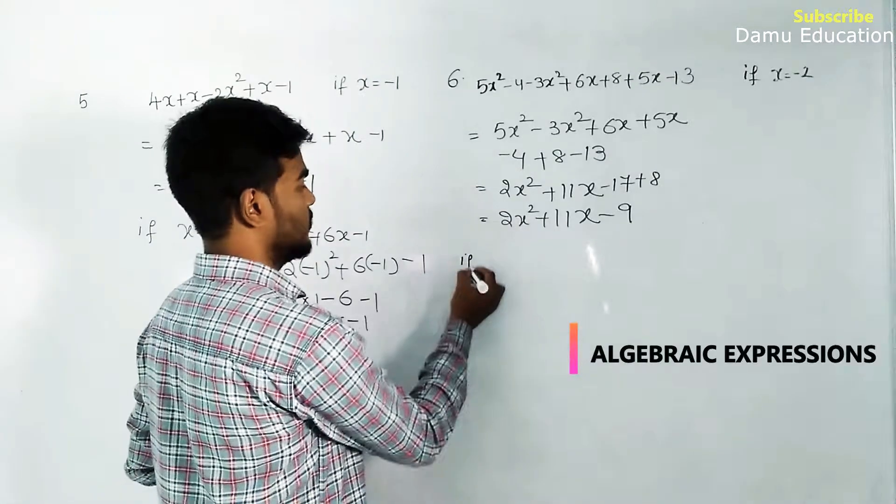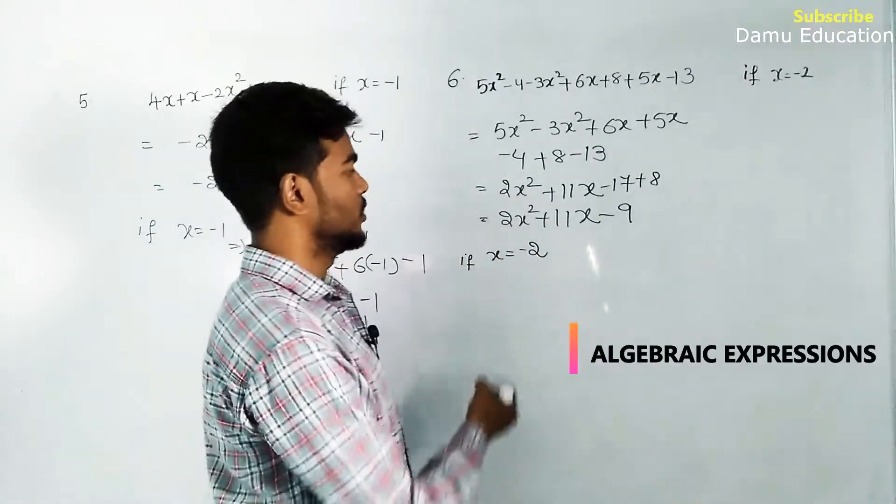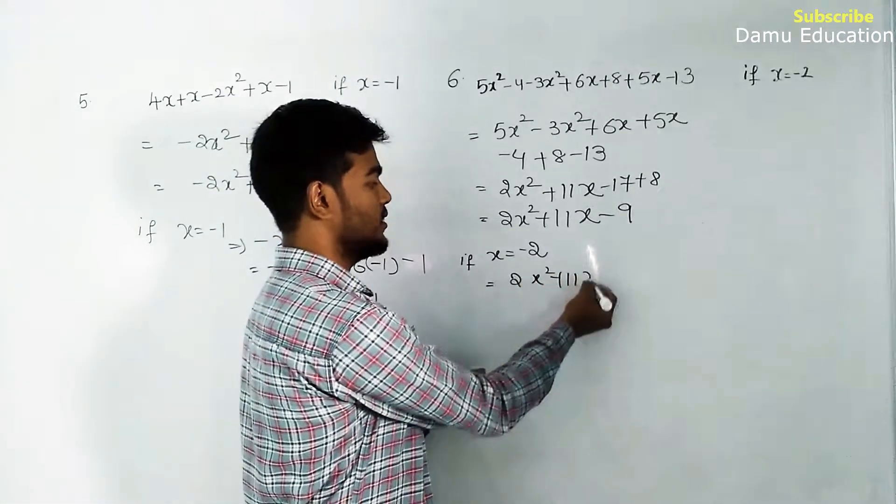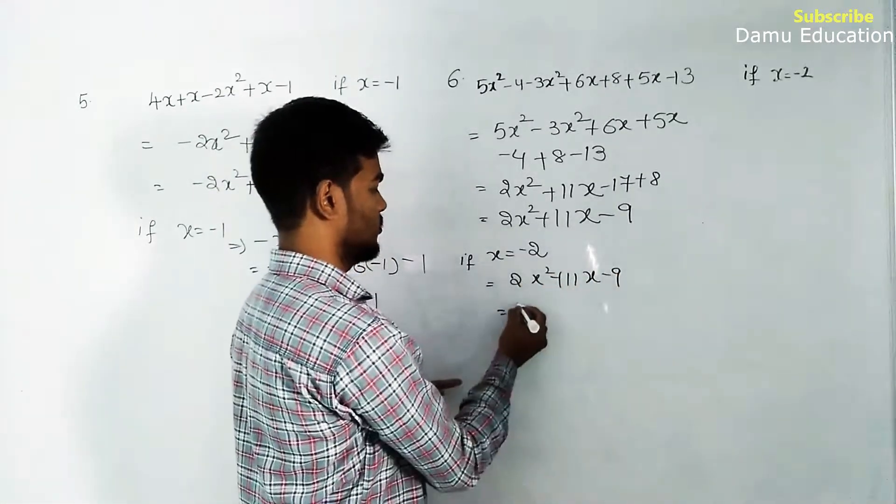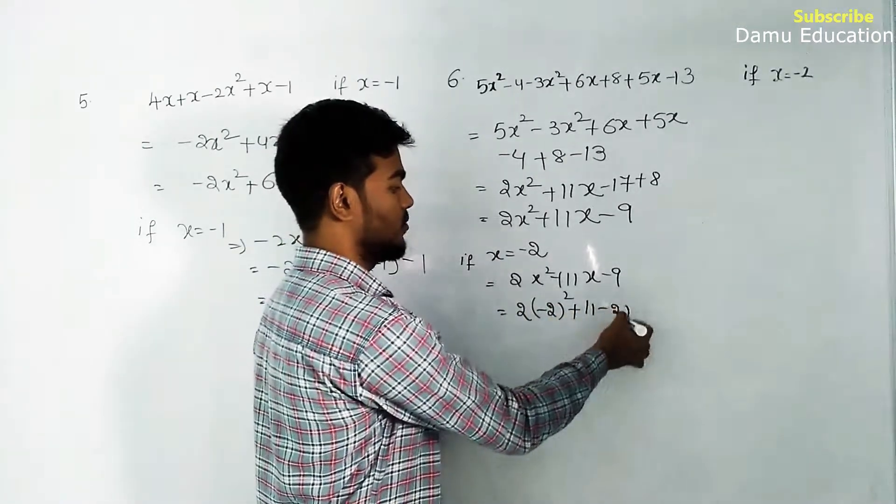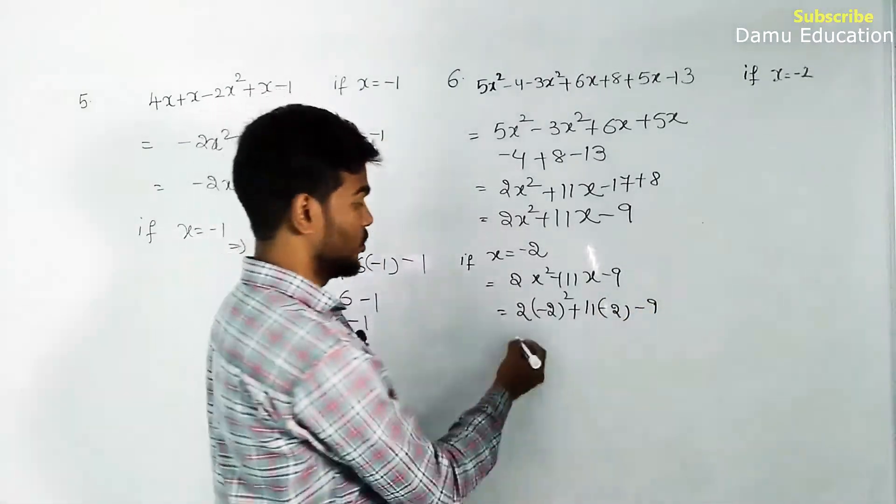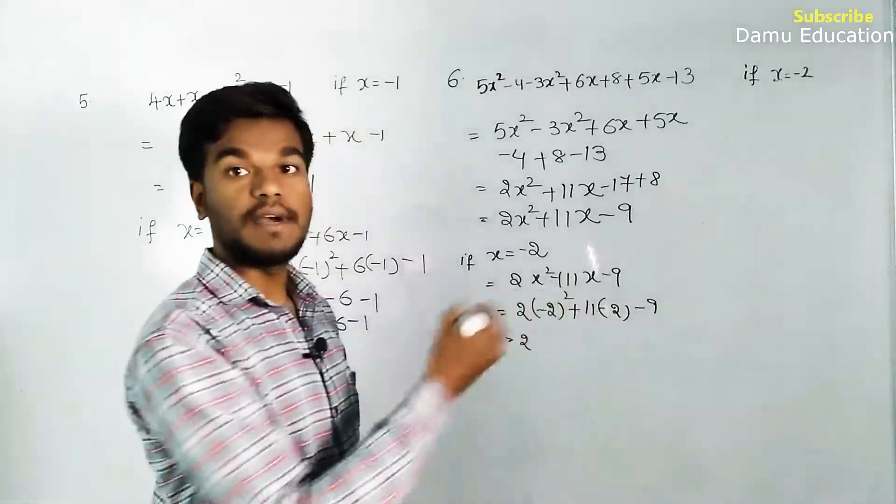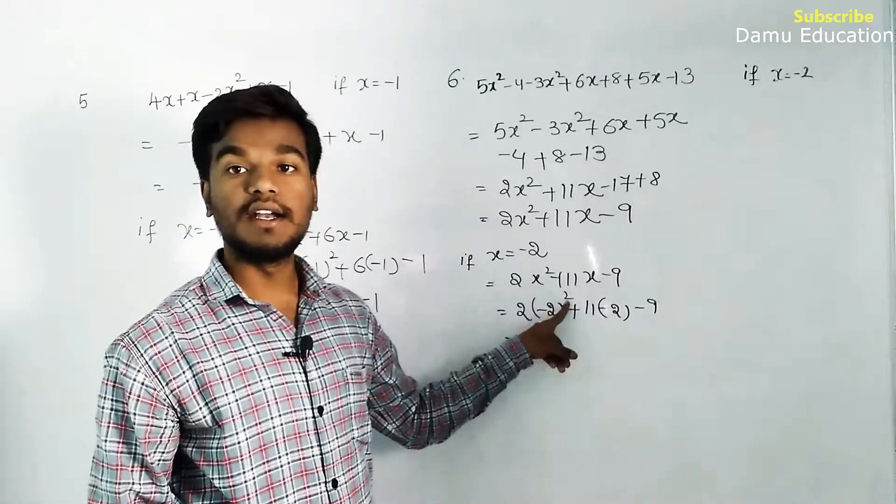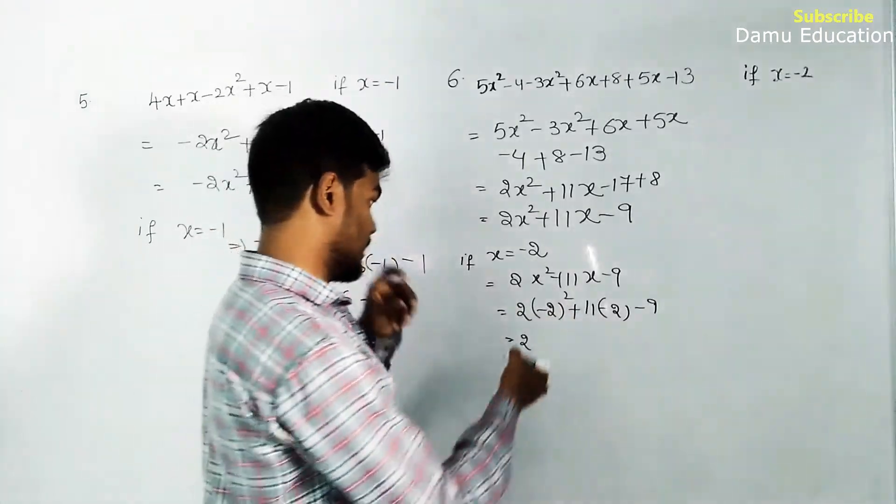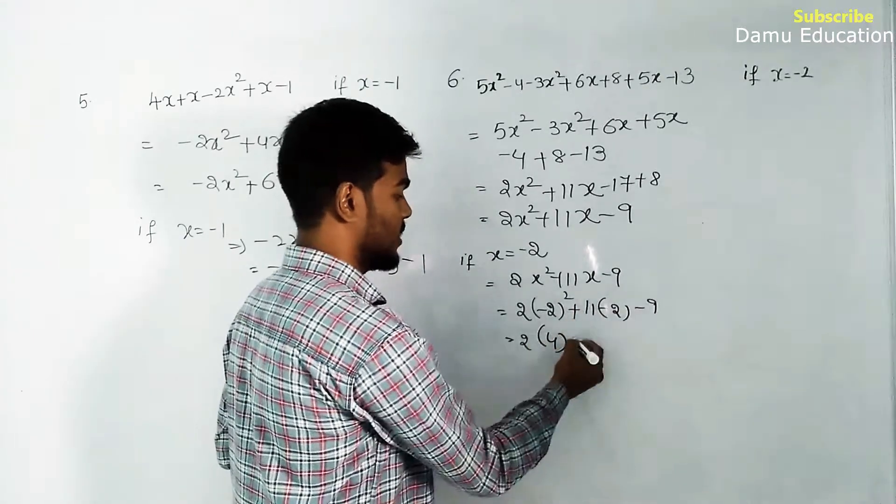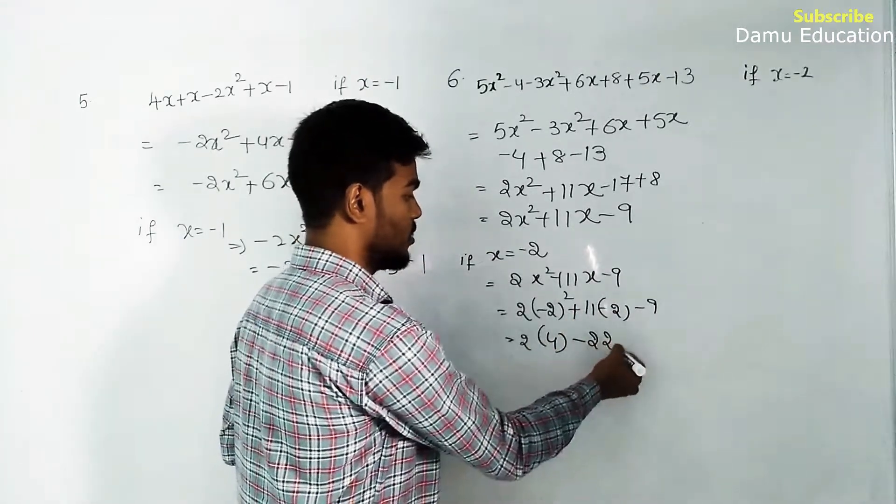Substitute x = -2: 2x² + 11x - 9 becomes 2(-2)² + 11(-2) - 9. Since -2 is raised to an even power, minus becomes plus: 2(4) - 22 - 9.